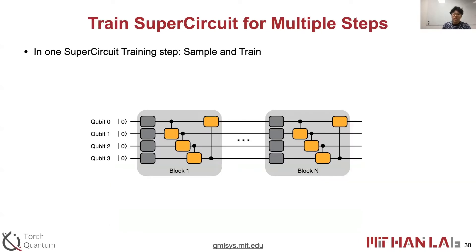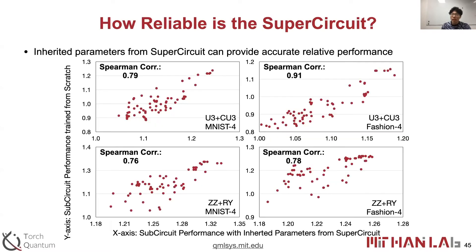With front sampling and restricted sampling, we can perform sub-circuit sampling and parameter training for many steps. Here we show the reliability of the super circuit. The x-axis is sub-circuit performance with inherited parameters from the super circuit, and the y-axis is sub-circuit performance trained from scratch. We can see a clear positive correlation between them, with a Spearman correlation score of around 0.8, so the inherited parameters are reliable enough to indicate the final performance.